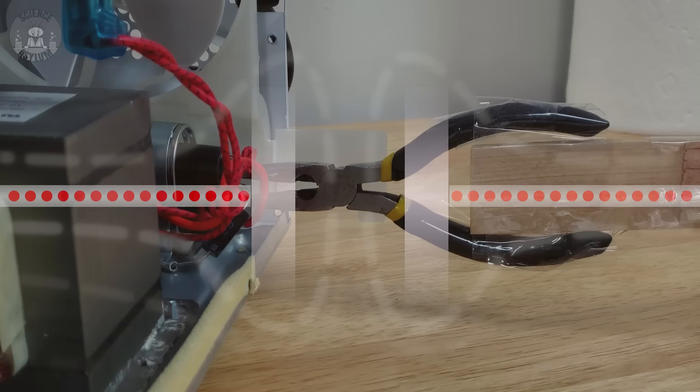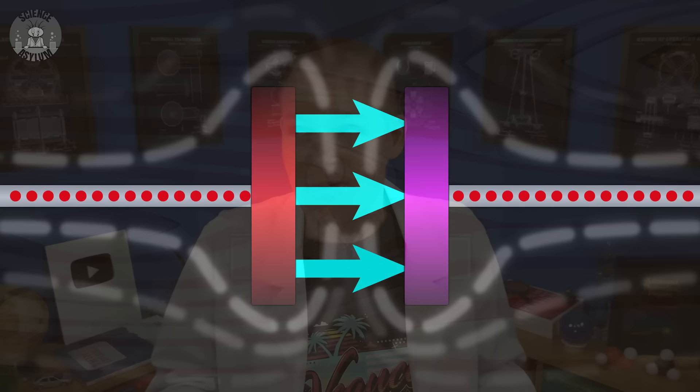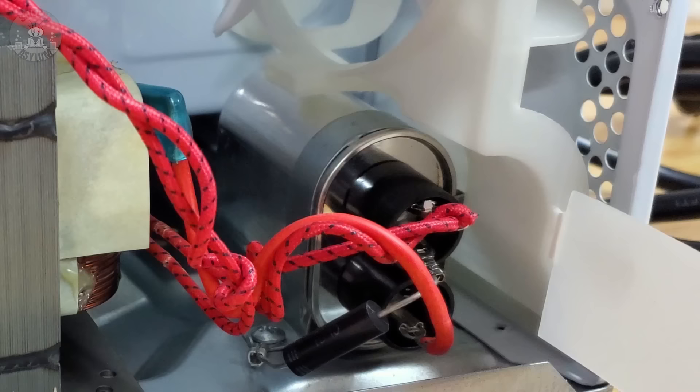Anyway, capacitors store electric charge on their metal plates, and therefore they store energy in the electric field between those plates. That energy can be used for all sorts of things. The capacitor in the microwave oven is using that energy for, uh, well, this might make the most sense if we take some measurements.